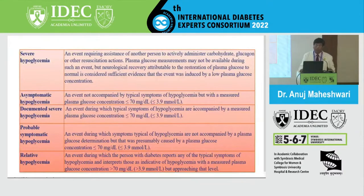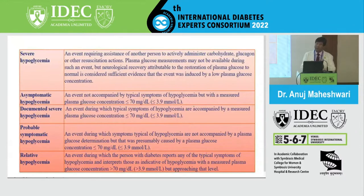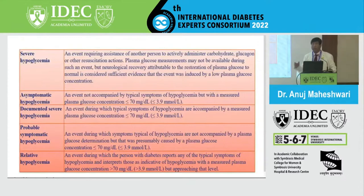Asymptomatic hypoglycemia is an event not accompanied by typical symptoms but with a measured plasma glucose concentration within the hypoglycemic limit - currently 70 mg/dL. However, symptoms of hypoglycemia actually arise once glucose comes down to 54 mg/dL. Neurological and other symptoms arise beyond this limit, but the International Diabetes Federation and American Diabetes Association have fixed the cutoff for hypoglycemia at 70 mg/dL. We now have many anti-diabetic agents that keep patients well controlled without hypoglycemia, so this cutoff was set to improve quality of life.